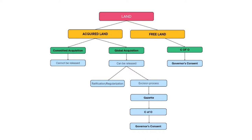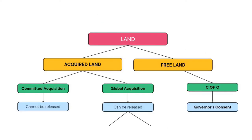The beautiful thing about this diagram is that whatever the state or title of your land, this will help you to know the route you can follow to perfect the title of that land. Now, it is good to note that the government is in charge of every land in a country or in a state. There are two basic types of land: acquired land and free land.